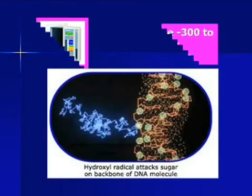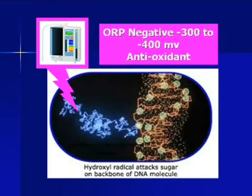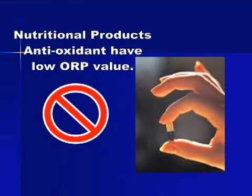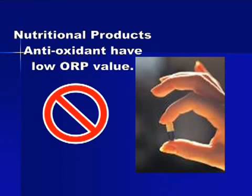You need a powerful anti-oxidant — something that has an ORP, which means Oxidation Reduction Potential, measuring between minus 300 to minus 400 millivolts. There are many anti-oxidant nutritional products in the market, like vitamins and fruit juices, but their ORP value is low. In Japan, for a substance to be considered strong enough to be medicinal and used in hospitals, it has to reach between minus 300 to minus 400 ORP.